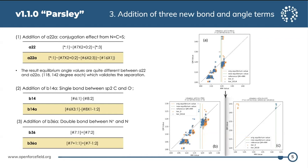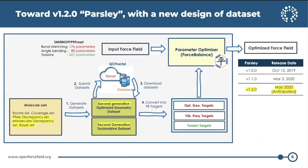Those were the three major improvements made in 1.1.0. Moving into 1.2.0, while 1.1.0 focused mainly on modifying parameter definitions, 1.2.0 focuses on the design of datasets used in the fitting procedure. For this purpose, we generated a second generation optimized geometry dataset and second generation torsion drive datasets.